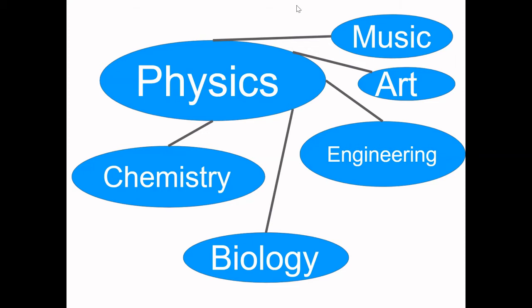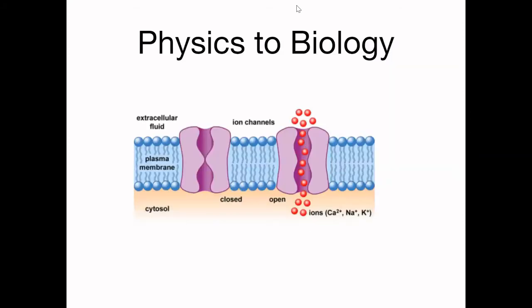So, just to show some examples. In cells, in biology, you have these things called ion channels, which like various ions go from the outside of the cell membrane to the inside of the cell membrane.